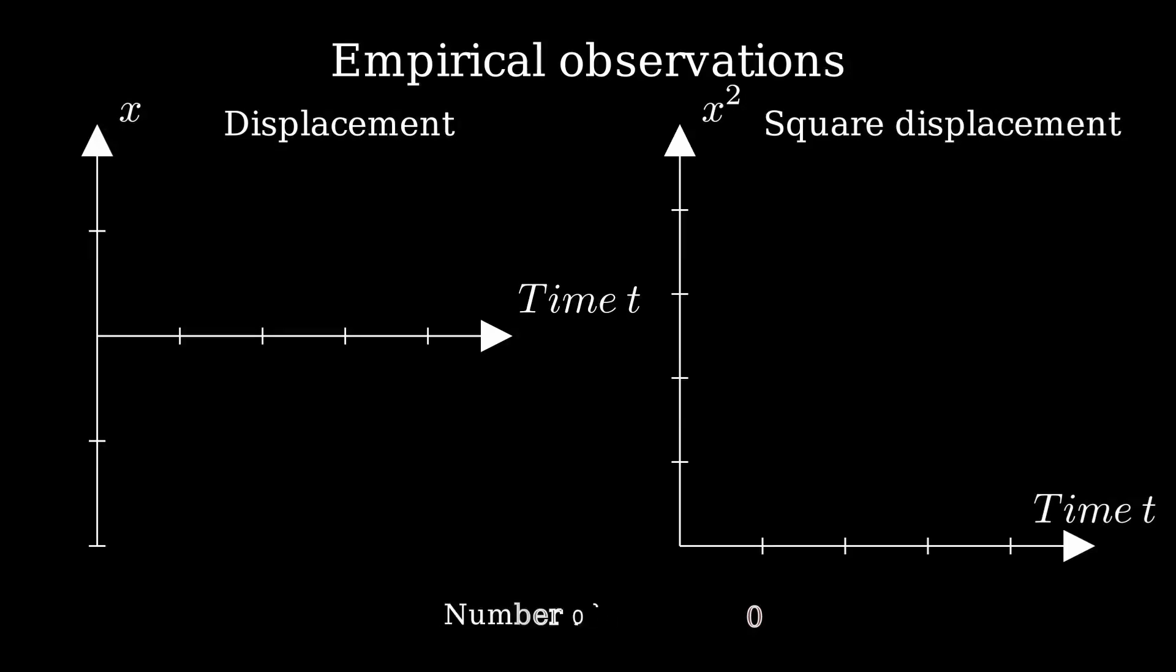Now, what can we learn from this experiment? Suppose that we track the position of one of these tiny particles relative to its starting point and plot that position over time. We would get a graph like this one.